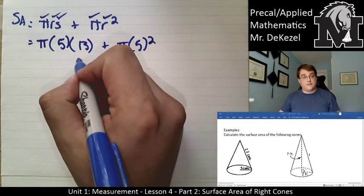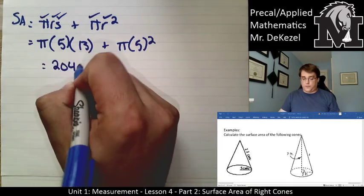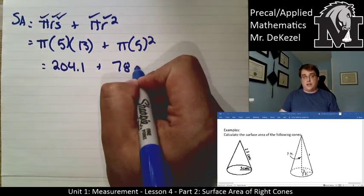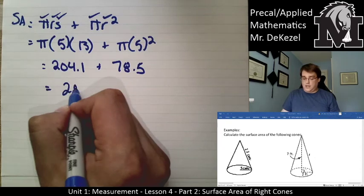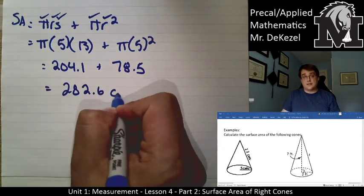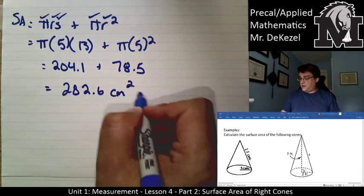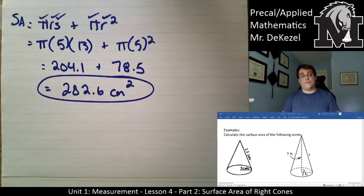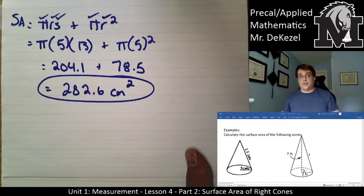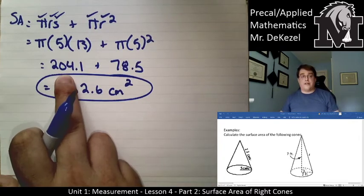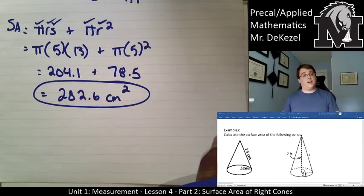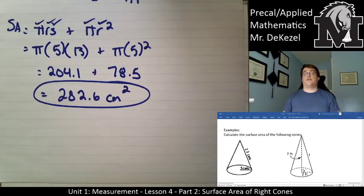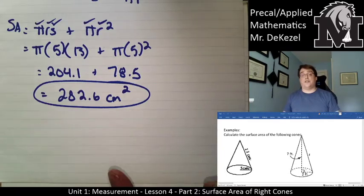Punching this into the calculator: that's 204.1 plus 78.5, all in centimeters squared. That gives 282.6 centimeters squared — 204.1 for the lateral area and 78.5 centimeters squared for the base. When talking about the surface area of a cone, there are really only two things you need to know: the radius and the slant height — you can find everything else from those.